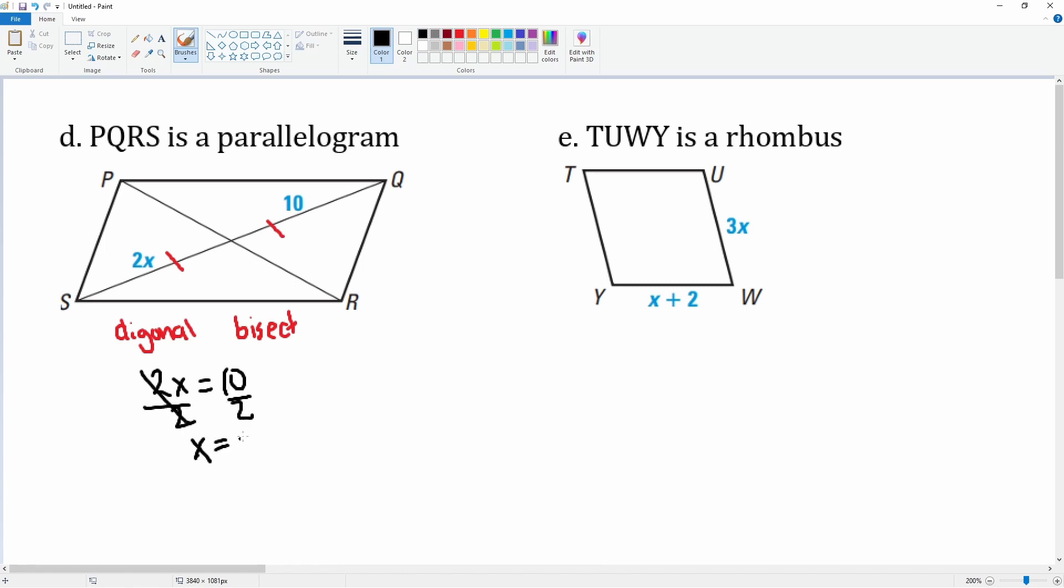x is equal to 5. Next, this is a rhombus. Did you know all the sides for a rhombus are congruent? That means 3x is equal to x plus 2. Minus x to both sides, this becomes 2x is equal, this cancels, equals 2. Divide 2 to both sides, 2 over 2 cancels, x is equal to 1.